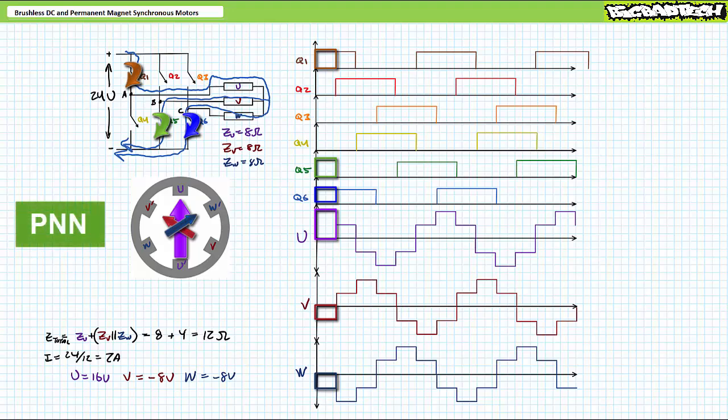Such that winding U experiences positive 16 volts and V and W, given current is leaving them, both experience negative 8 volts. This particular switching state is known as PNN, meaning the positive switch in the first column is closed and the negative switches in columns 2 and 3 are closed. Given our stator arrangement, winding U and the contributions of windings V and W coalesce into one unified field pointing straight up and down at zero degrees.